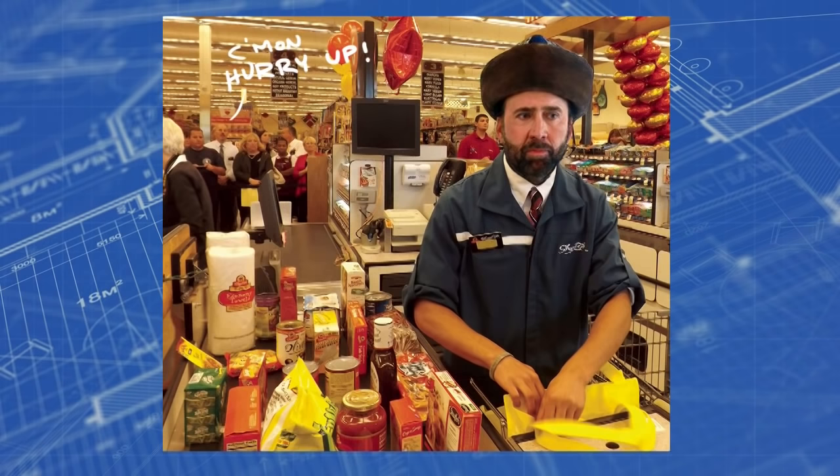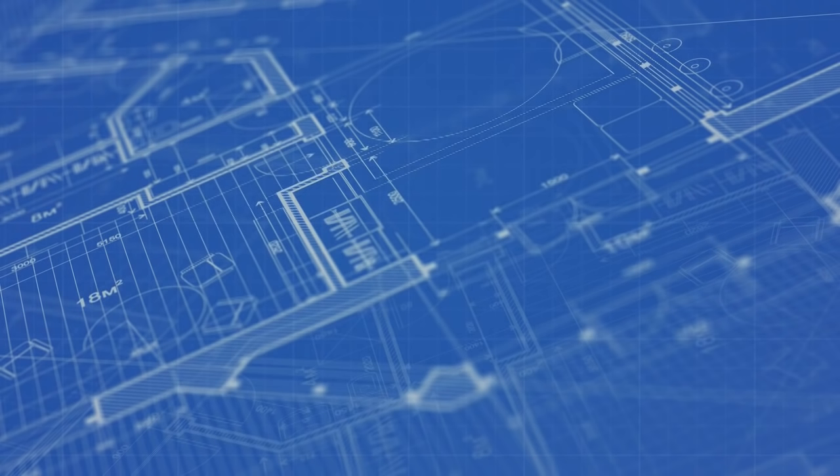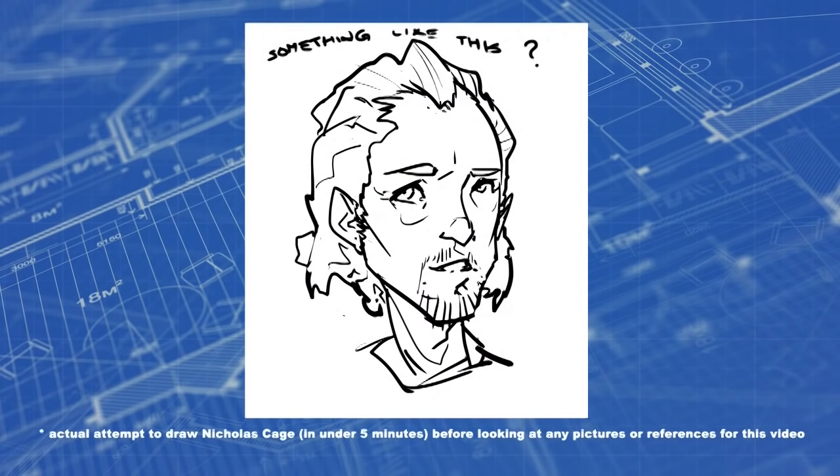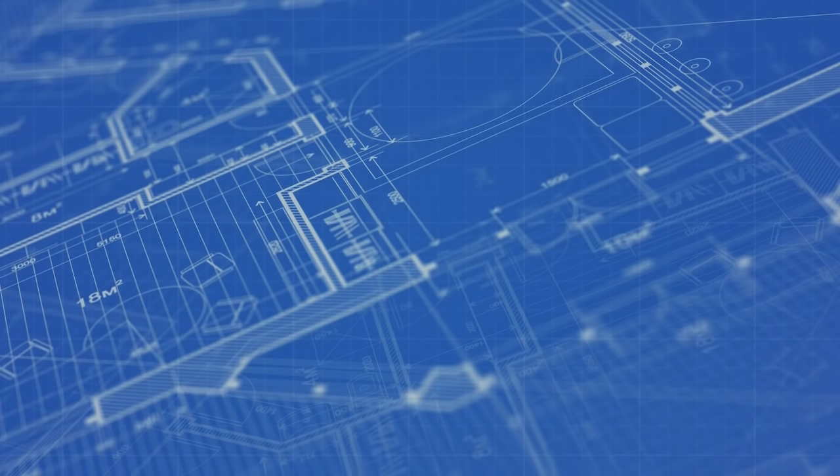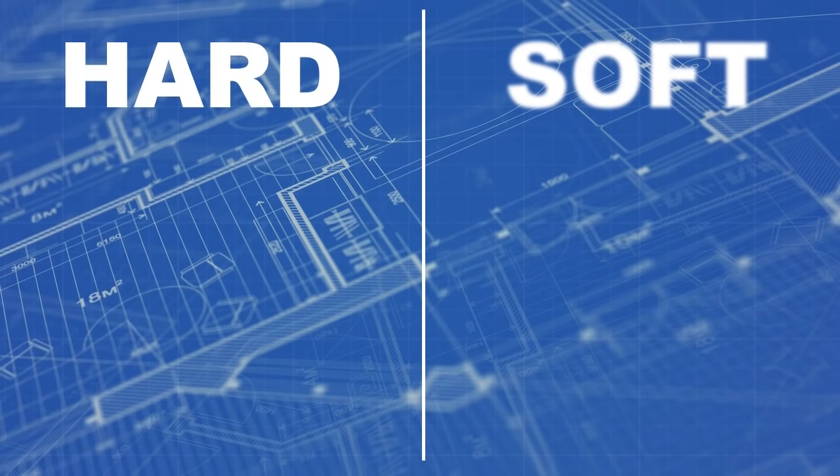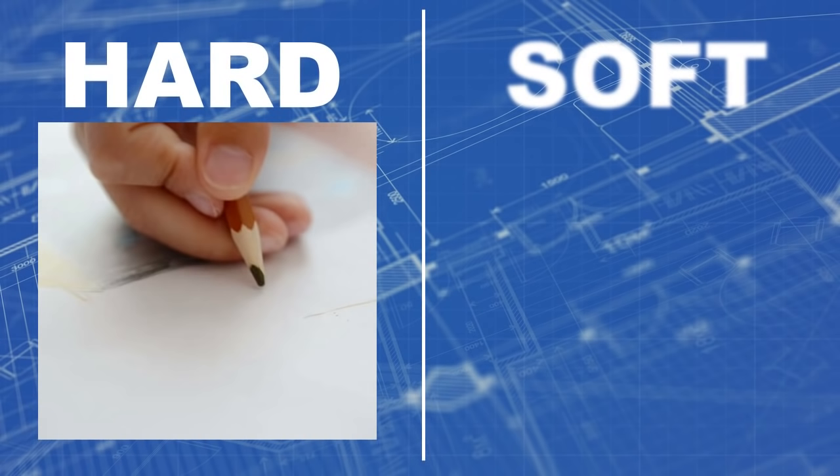For a quick example, we all could probably identify Nicolas Cage if we saw him at our local supermarket, but chances are if we had to draw him without any reference, we might find it quite difficult to get a decent likeness. You could probably even apply this to a self-portrait. If you've never drawn one before and had no mirror or photo to go off of, you might find it to be far more challenging than you would expect. Then again, if you have drawn one before, it might not be too bad.